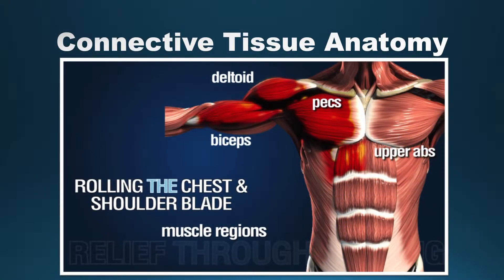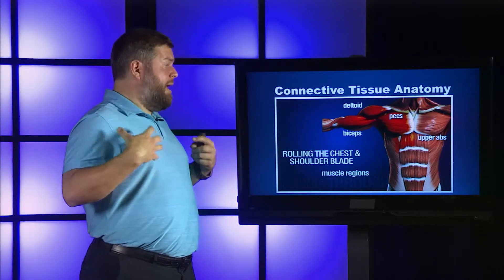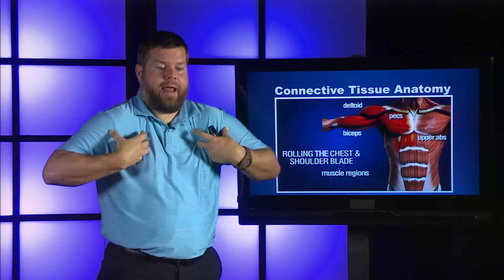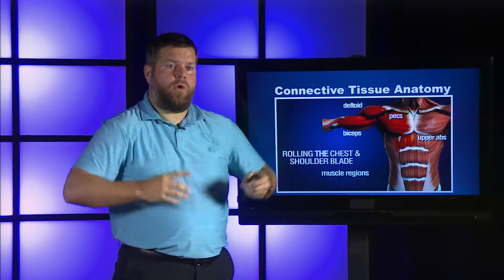There are actually some guys where their pectoralis major can be anywhere between three or four inches thick if they're big bodybuilders or football players and they've really developed that chest musculature. It can really have a huge impact on the position of where that shoulder girdle is hanging and sitting within the whole structure.